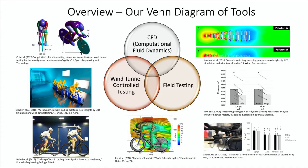The Venn diagram basically shows the intersection between CFD, wind tunnel testing, and field testing, to give you a flavor of the kinds of scientific research that have been done just in the last decade — most of this actually within the last three years. There are some snapshots of results as well as experimental setups from studies in recent times.